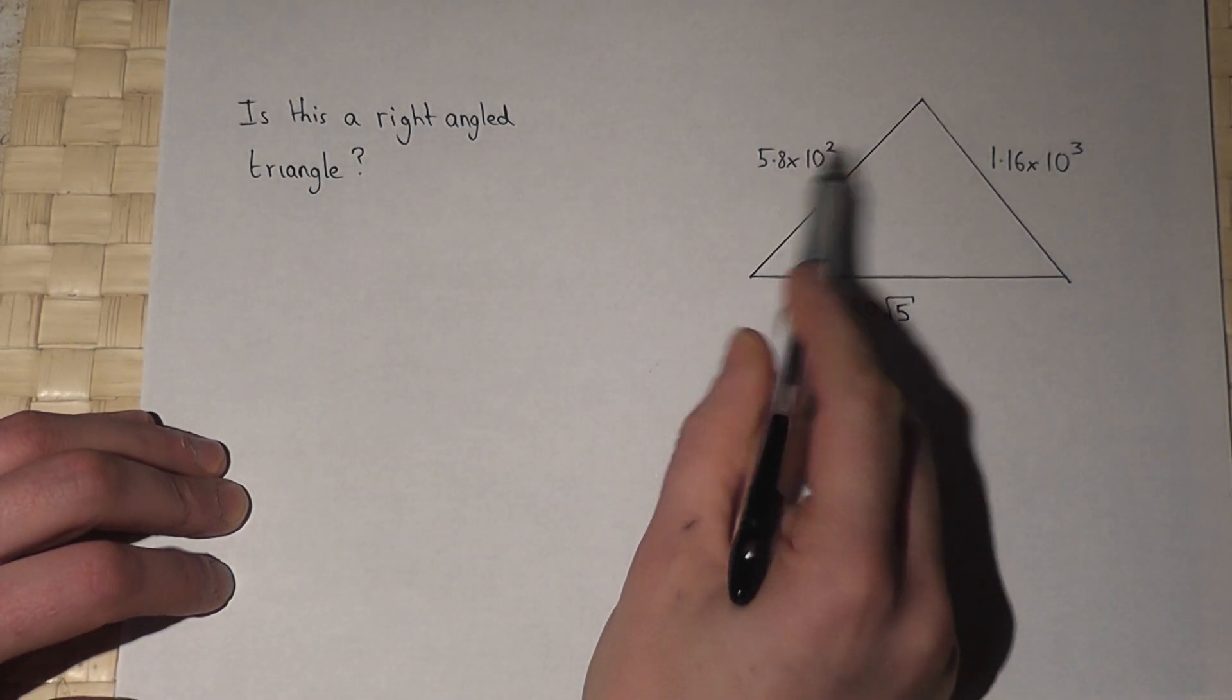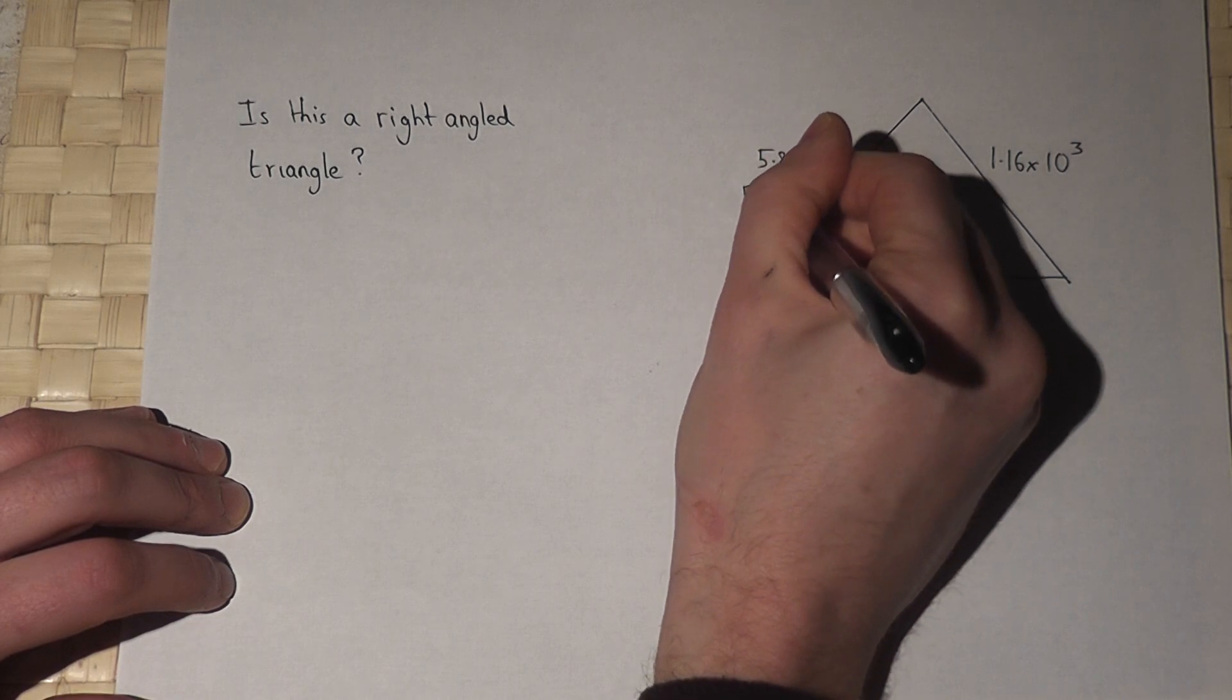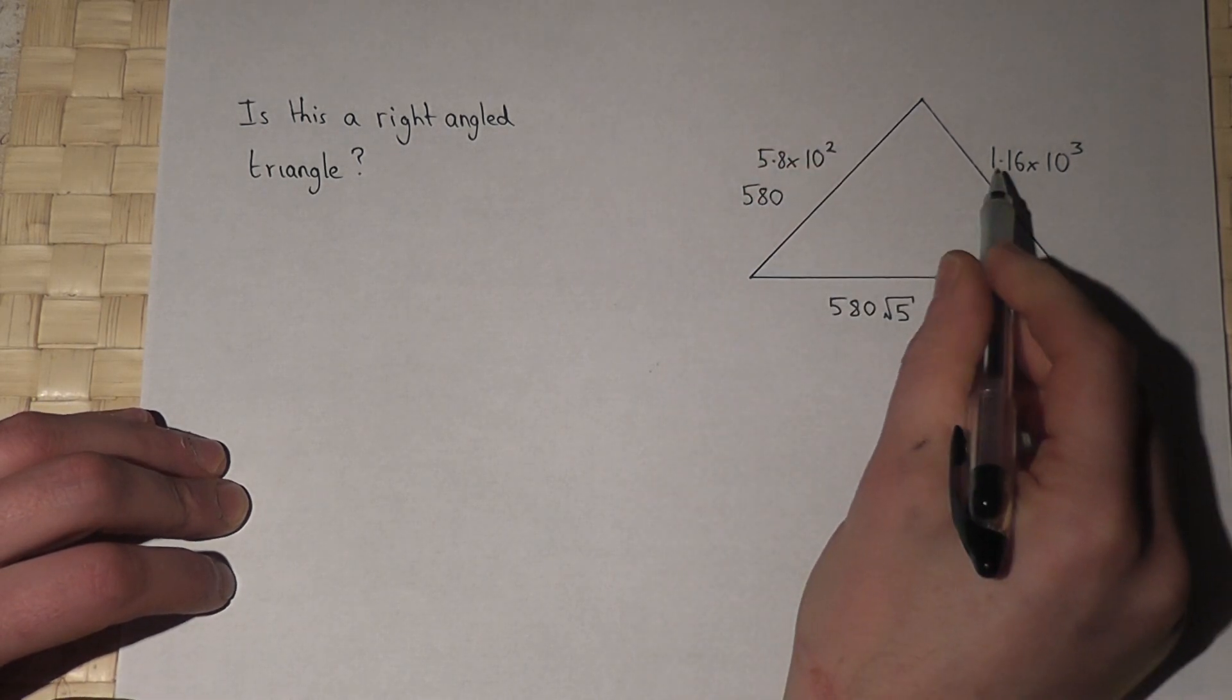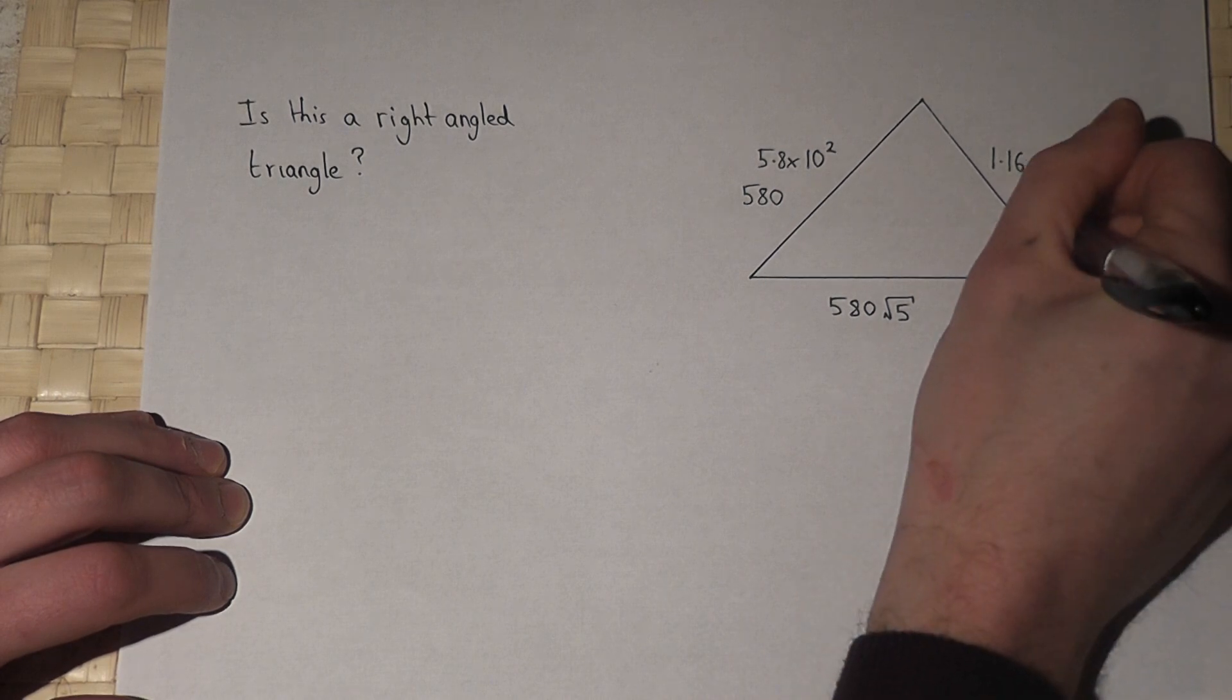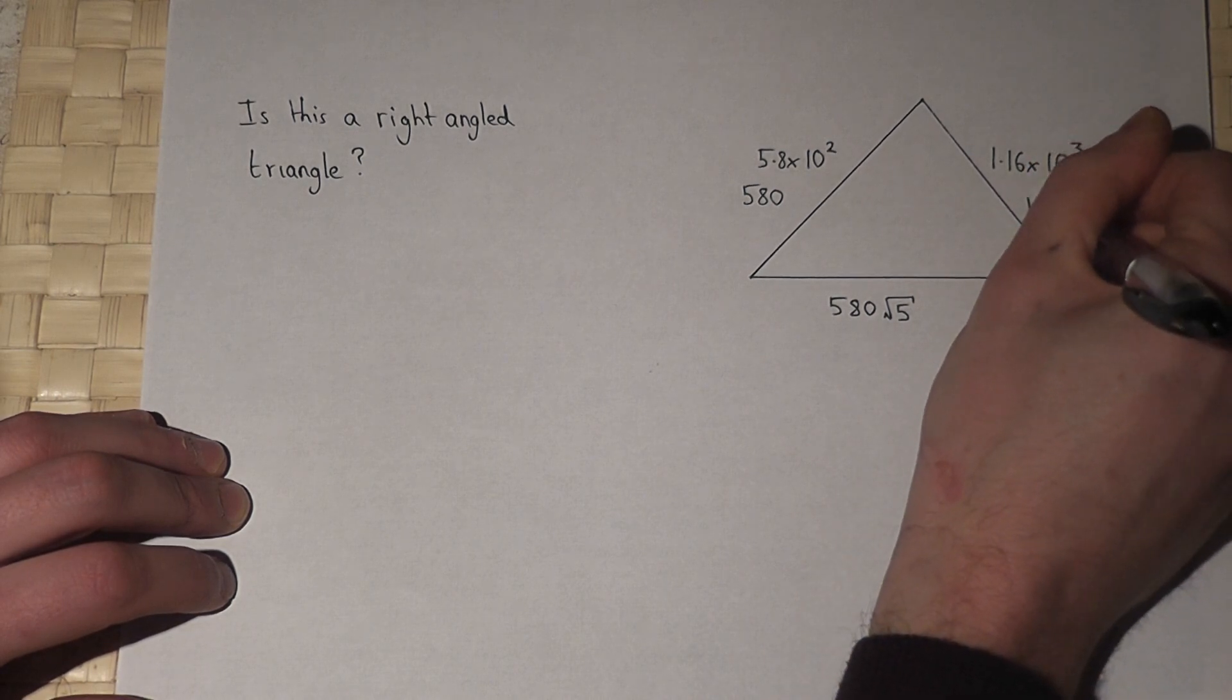Now, 5.8 times 10 to the 2 is 580. 1.16 times 10 to the power of 3 is 1160.